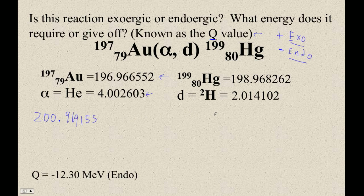Let me double check that I did type in the right thing. And indeed I did. And then the right side is 198.968262 plus 2.014102. These all, by the way, have uncertainties. If you go to that South Korean site, they give the uncertainties.